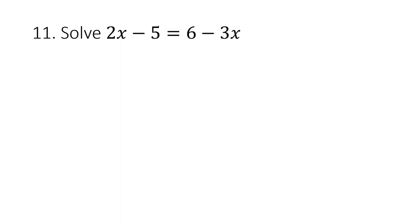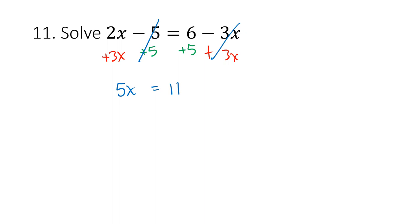For the linear equation 2x minus 5 equals 6 minus 3x, the strategy is to get all x's on one side. Add 3x to both sides and add 5 to both sides. That gives 5x on the left — the other terms cancel — and 6 plus 5 is 11 on the right. Dividing both sides by 5 gives x equals 11/5.